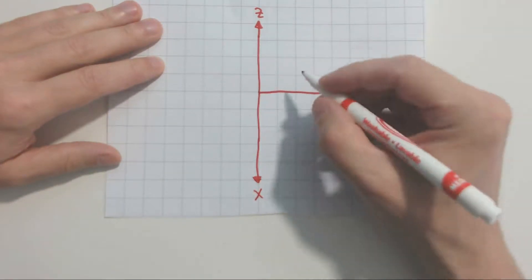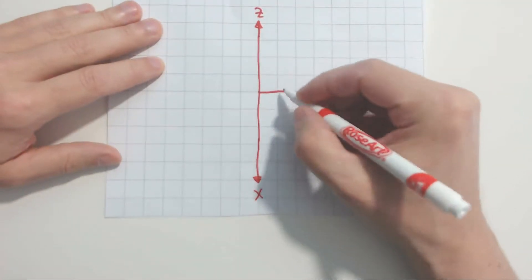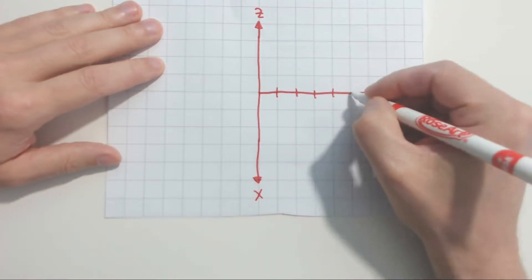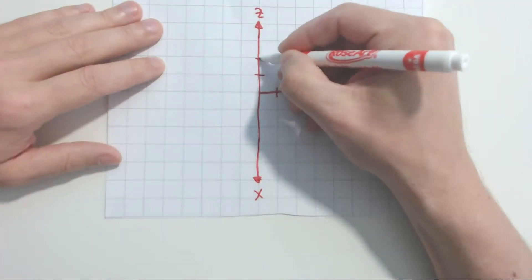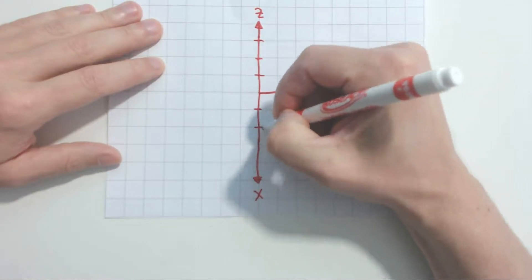Now after that, let's add some numbers. I'm going to add the following little hash marks. That's what we call those. Same thing along the Z axis. Same thing over here along the X axis.